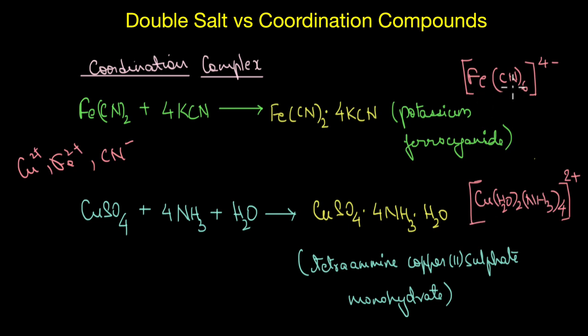Instead, their complexes remain completely intact. Thus, cupra ammonium, iron, and ferrocyanate ions exist as distinct entities both in solid as well as in their solutions.